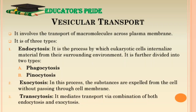What is vesicular transport? Basically it is a type of transport by vesicular formation. It involves the transport of macromolecules across the plasma membrane. It is of three types: endocytosis, exocytosis, and transcytosis. In endocytosis, it is the process by which eukaryotic cells internalize material from their surrounding environment, and it is further divided into phagocytosis and pinocytosis. In exocytosis, substances are expelled from the cell without passing through the cell membrane. In transcytosis, it mediates transport via a combination of both endocytosis and exocytosis.